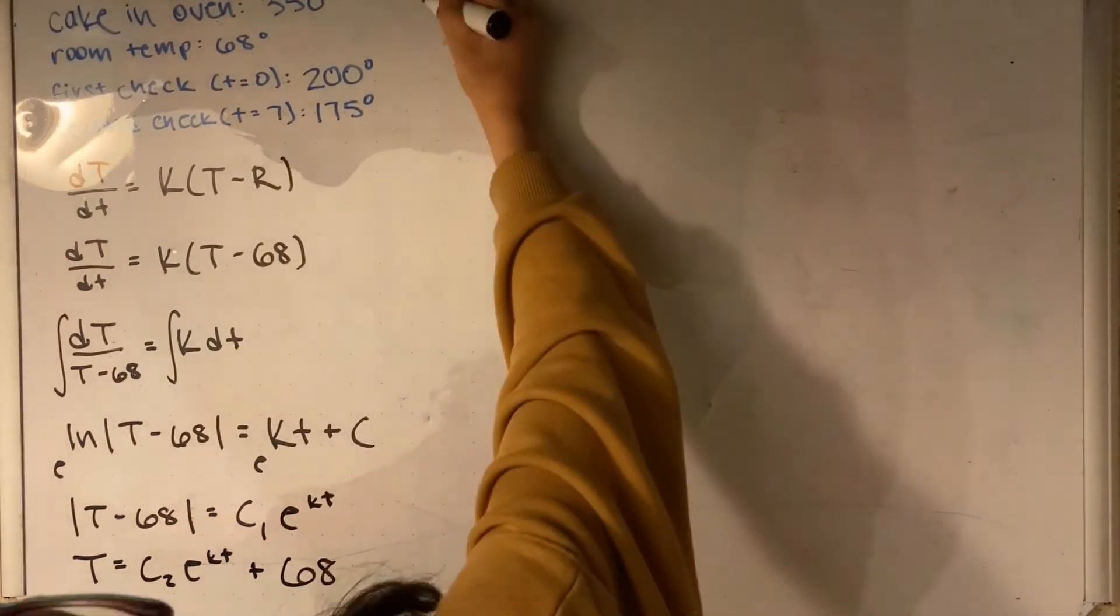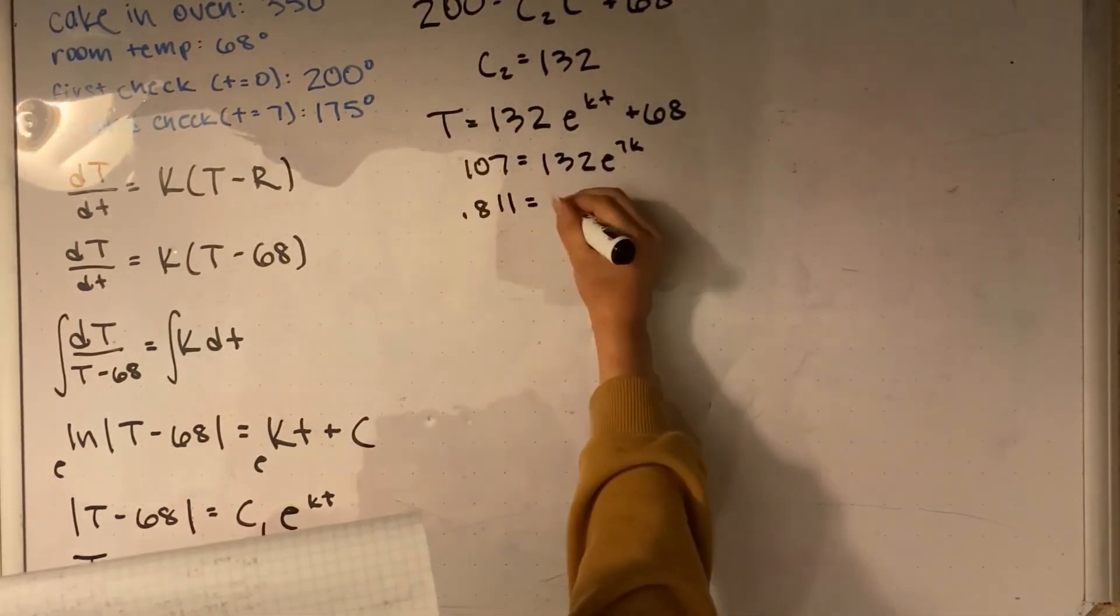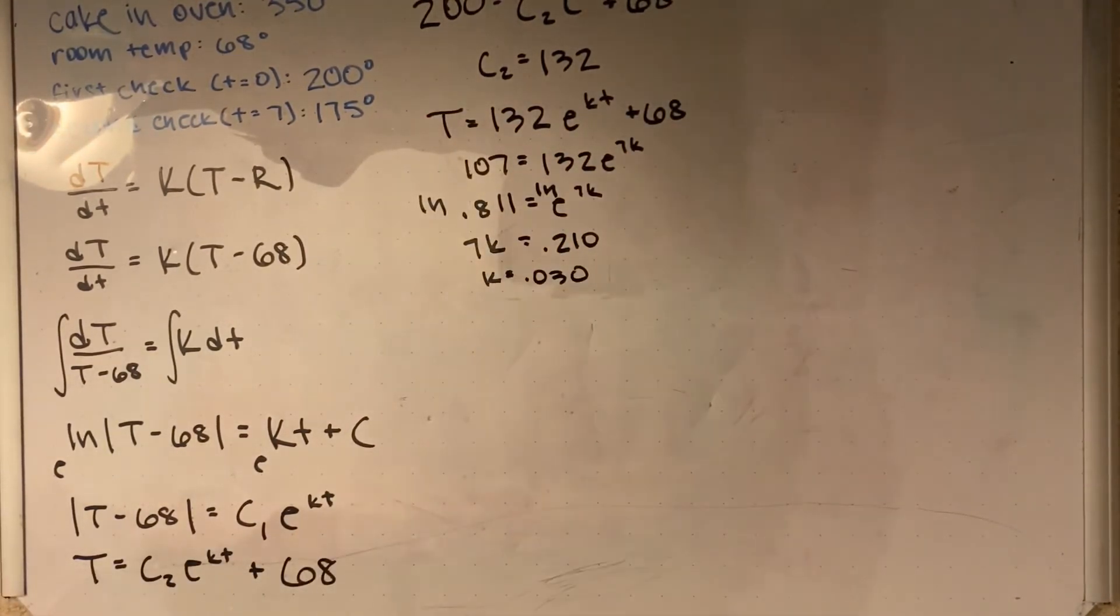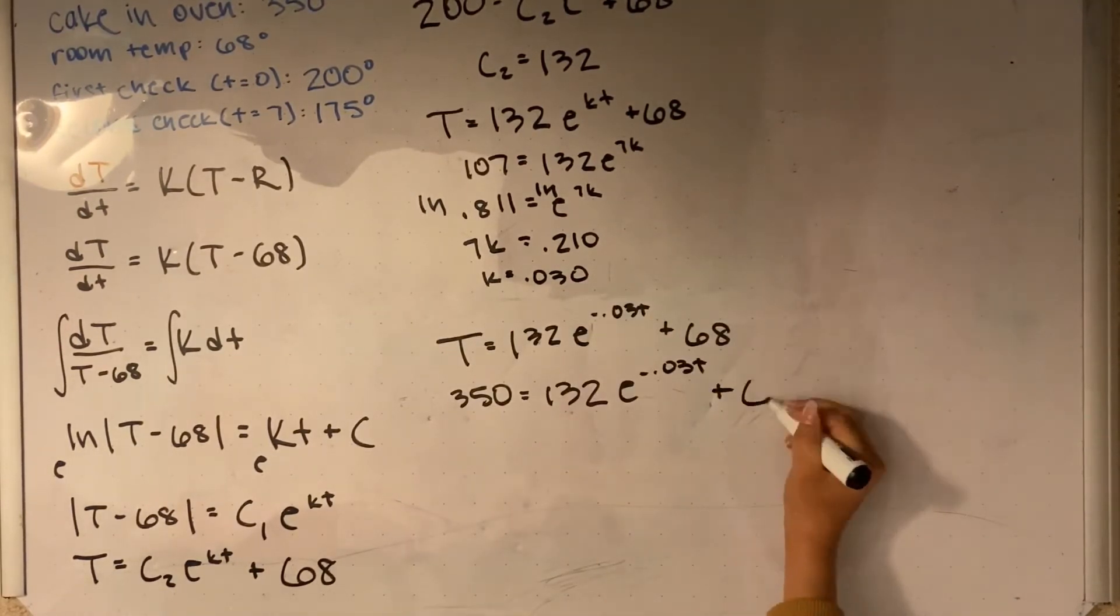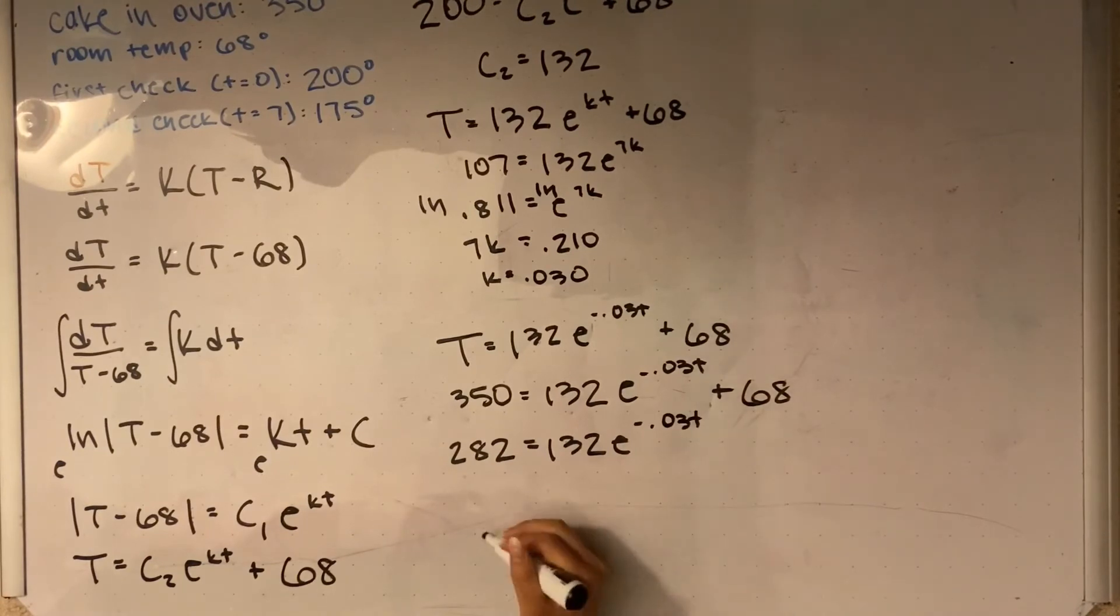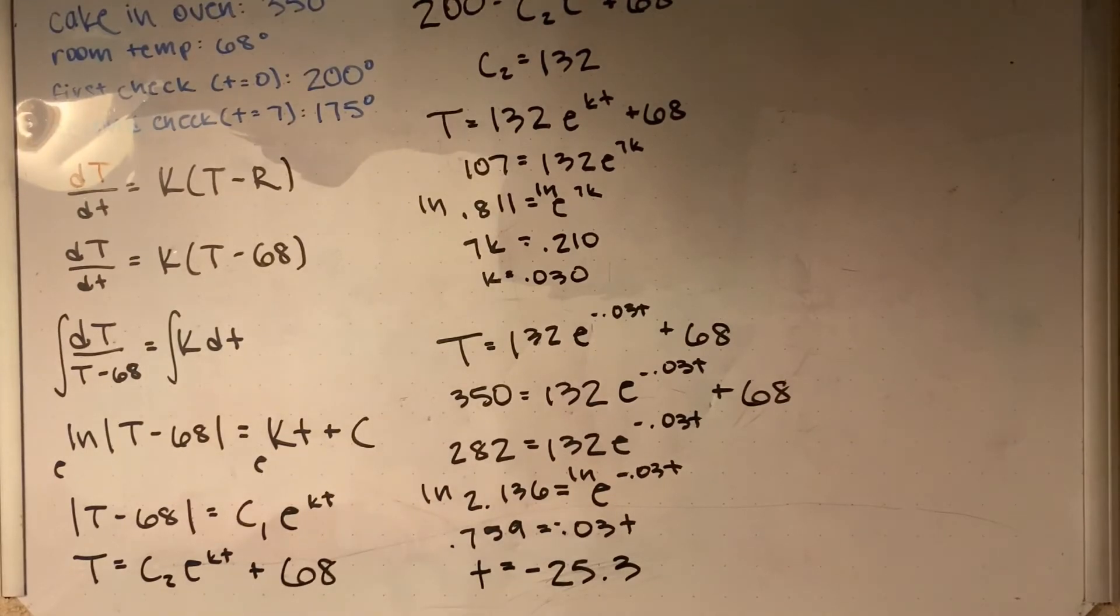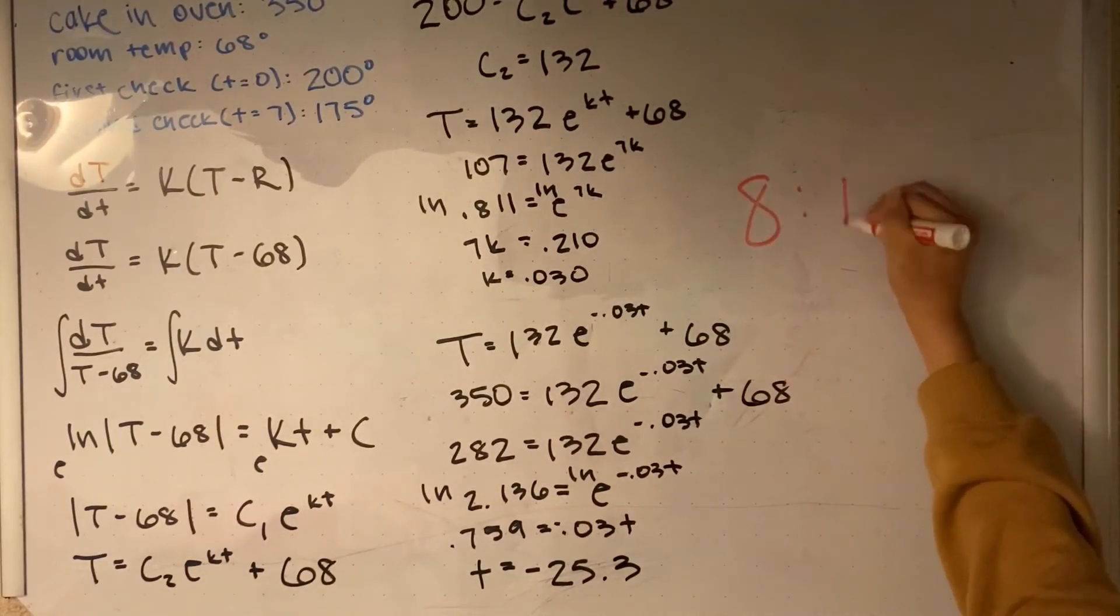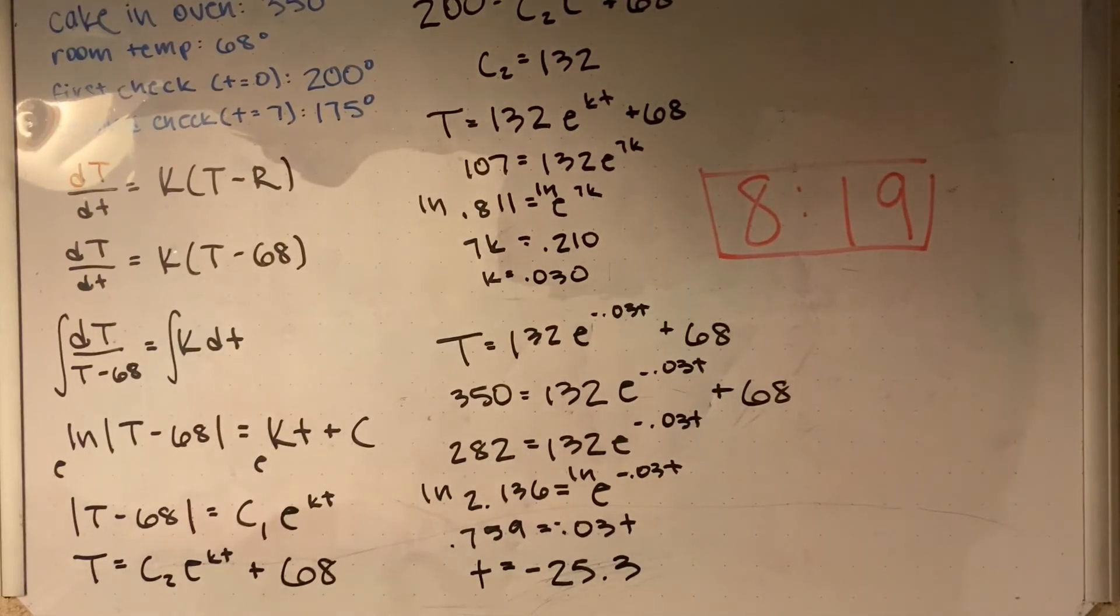We can then plug in the first point that we checked. This simplifies out to get a k value of 0.03. If we plug this into our equation and use our second point, we can simplify the same way to get that t equals negative 25.3. This means that the cake was 350 degrees 25.3 minutes ago, and we know it was taken out of the oven at 8:19.